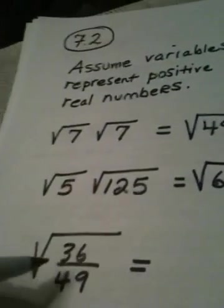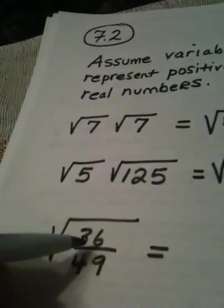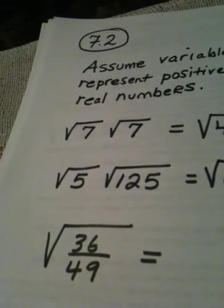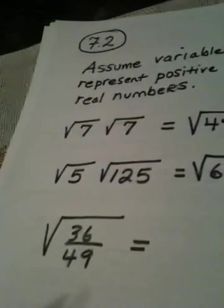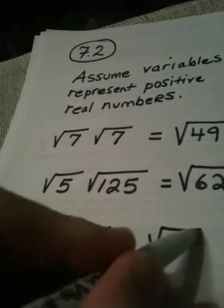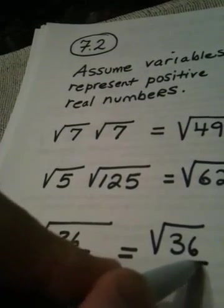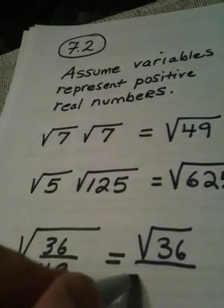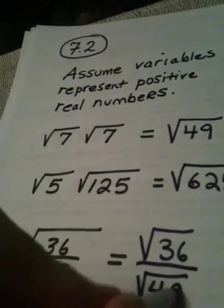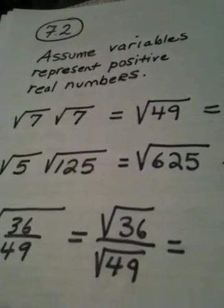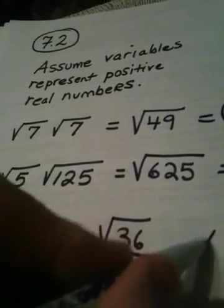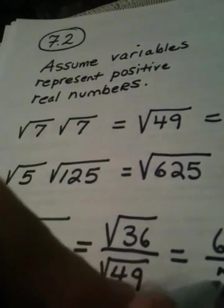Here this is actually going to be the quotient rule because 36 divided by 49 is the quotient. When we see a quotient under a radical, we're allowed to split it. Square root of 36 on the top, square root of 49 on the bottom, and when we evaluate, 6 over 7.